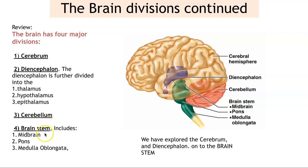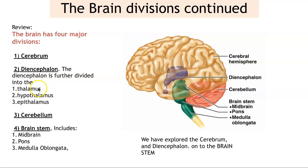We'll do the cerebellum at the end. So the brain stem has three parts to it. Seems like everything has three parts. The cerebrum has three parts: cerebral cortex, white matter, basal nuclei. The diencephalon has three parts: thalamus, hypothalamus, epithalamus. And the brain stem has three parts: midbrain, pons, and the medulla oblongata.